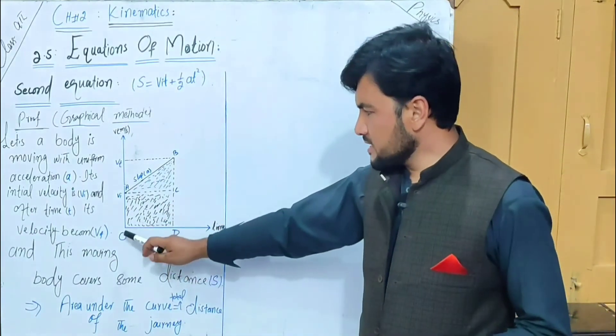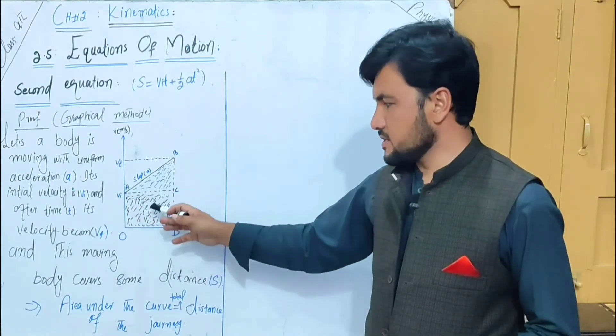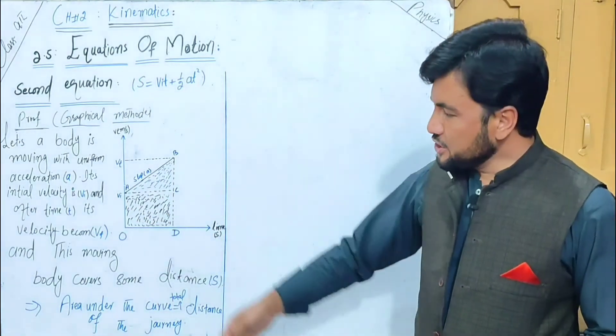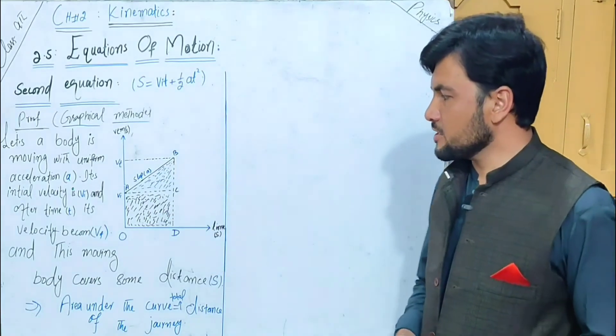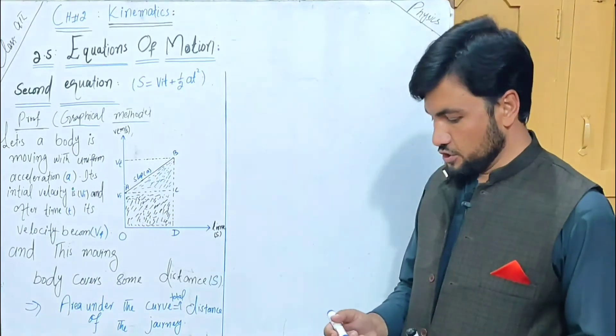Now we will derive the second equation of motion. There are two shapes: one is the triangular shape and the other is the rectangular shape ABCD.